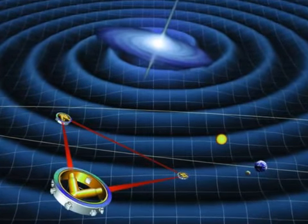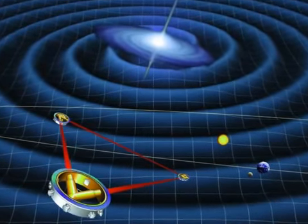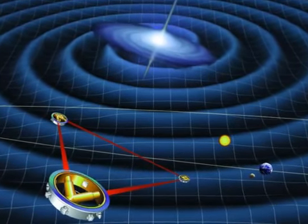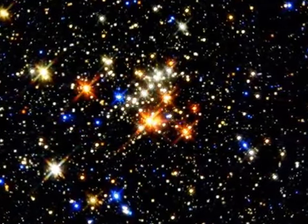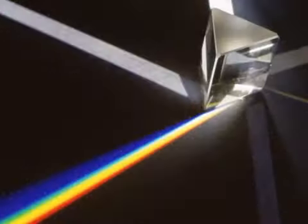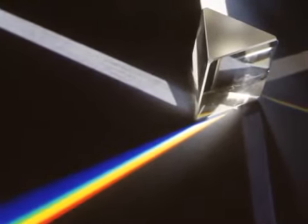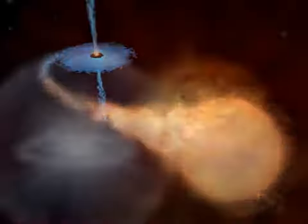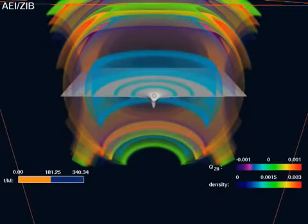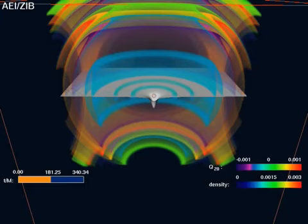Gravitational wave astronomy could expand our knowledge of the cosmos dramatically. Gravitational waves, though weakening with distance, are thought to be unchanged by any material they pass through, and therefore should carry signals unaltered across vast regions of space. By comparison, electromagnetic radiation tends to be modified by intervening matter. Aside from demonstrating the existence of black holes and revealing data on supernovae and neutron stars, gravitational wave observations could provide an independent means of estimating cosmological distances, help further our understanding of how the universe came to be, and unveil phenomena never considered before.